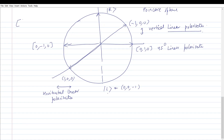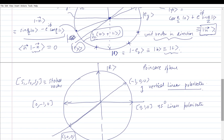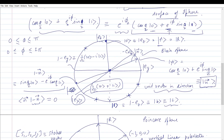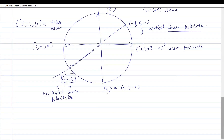The three components S1, S2, S3 — the x, y, z coordinates on the sphere — are called the Stokes vector. More generally, the vector n pointing to any state on the Bloch sphere is called the Bloch vector. These are just definitions and representations of states.